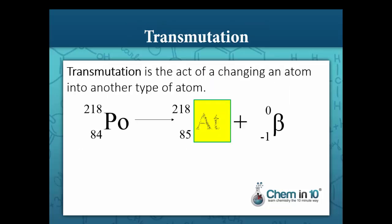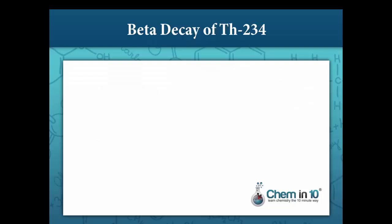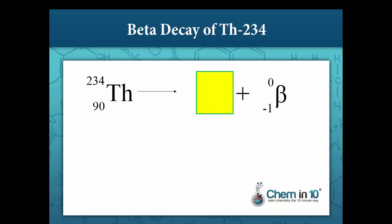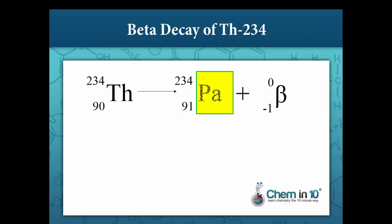As with alpha decay, the emission of a beta particle results in the transmutation of the atom. In the beta decay of thorium-234: the mass number stays the same, so the mass number of our new nuclide is still 234, and the atomic number increases by 1, so it becomes 91. Notice that 91 plus negative 1 equals 90, the atomic number of thorium. Our new nuclide is palladium-234.